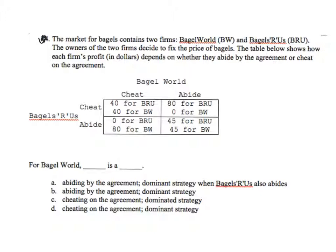So the market for bagels contains two firms: Bagel World and Bagels R Us. The owners of the two firms decide to fix the price of bagels. The table below shows how each firm's profit in dollars depends on whether they abide by the agreement or cheat on the agreement. So here we have what looks to me like it's probably a prisoner's dilemma. Let's just see.